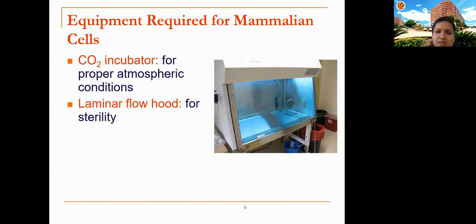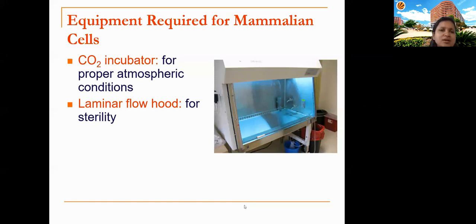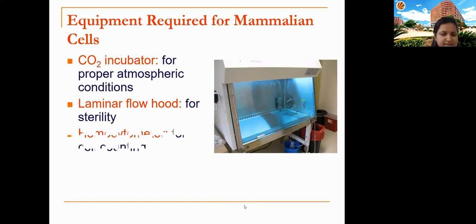Cell culture is very prone to contamination because the same 37°C temperature and nutrient-rich media that support cell growth also support bacteria and other microorganisms. We don't want other organisms growing instead of our cells. To maintain a sterile environment, we use a laminar flow hood, which has a HEPA filter and maintains a unidirectional flow of sterile air, preventing any interfering microorganisms from entering.